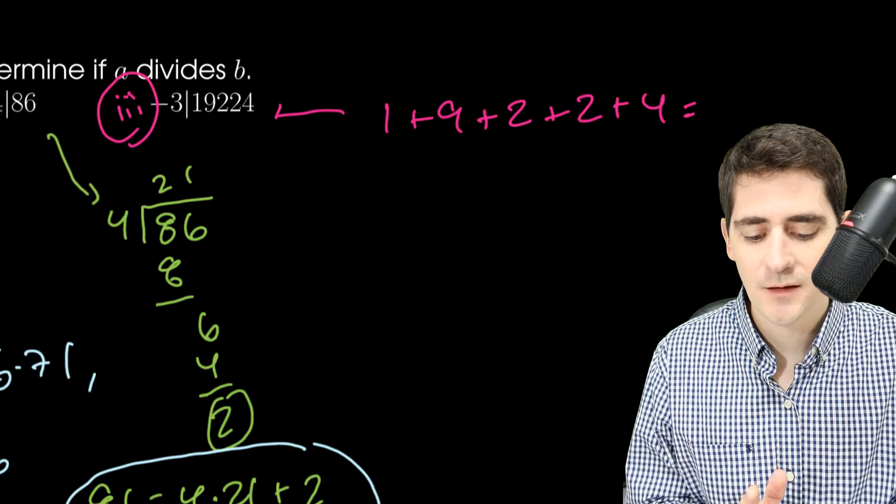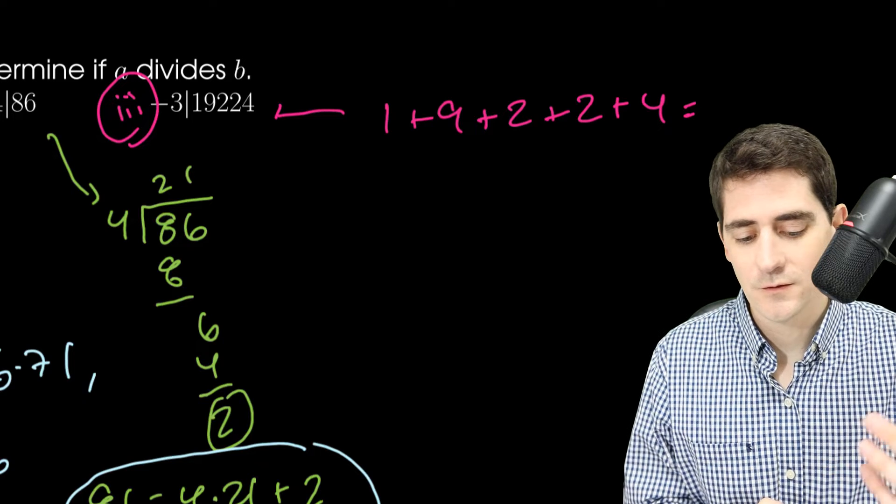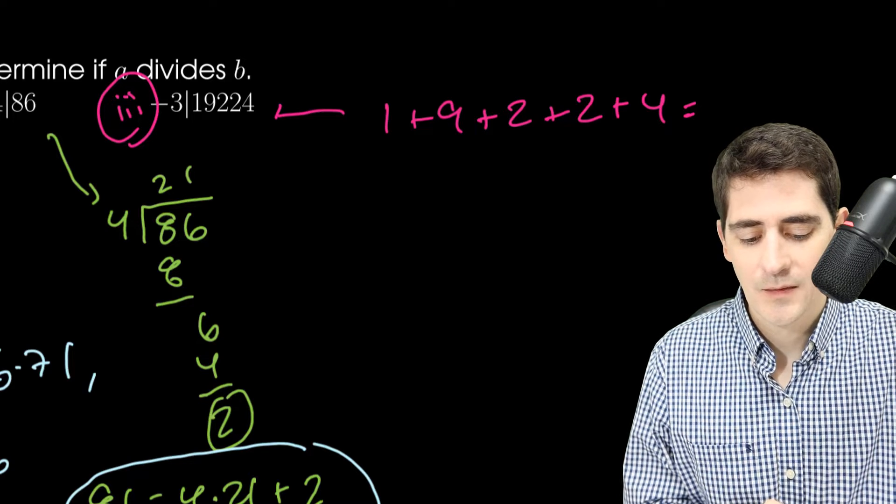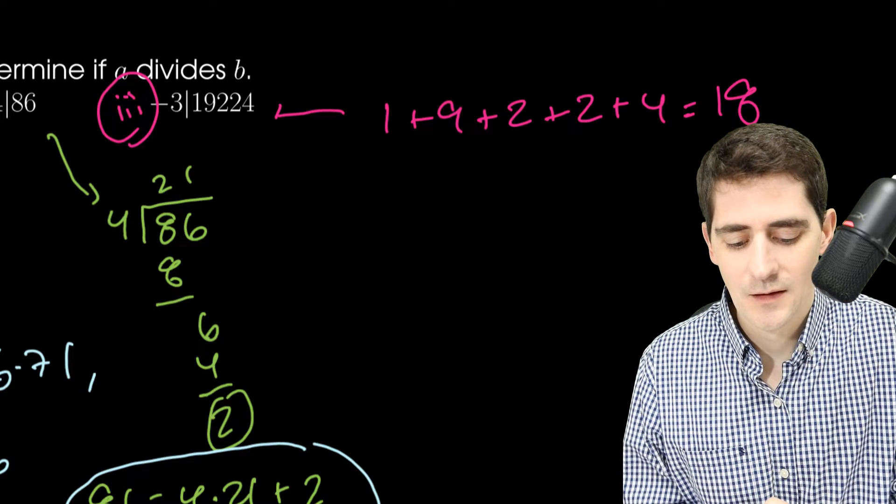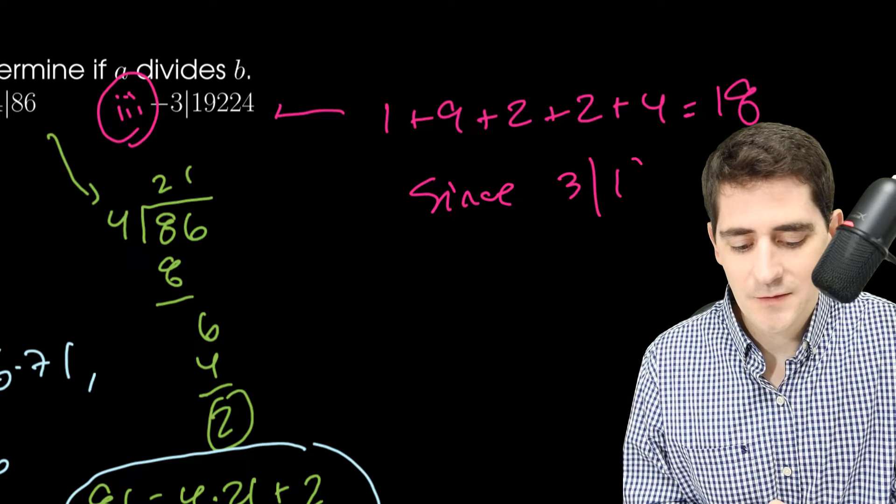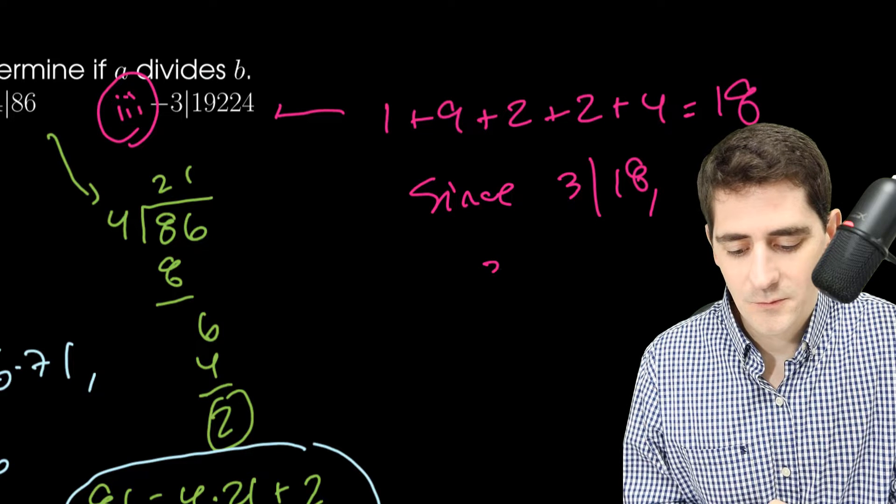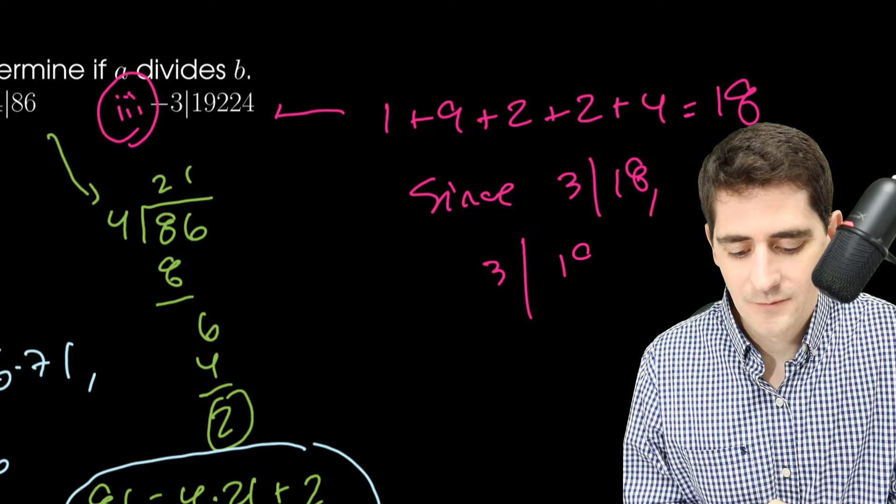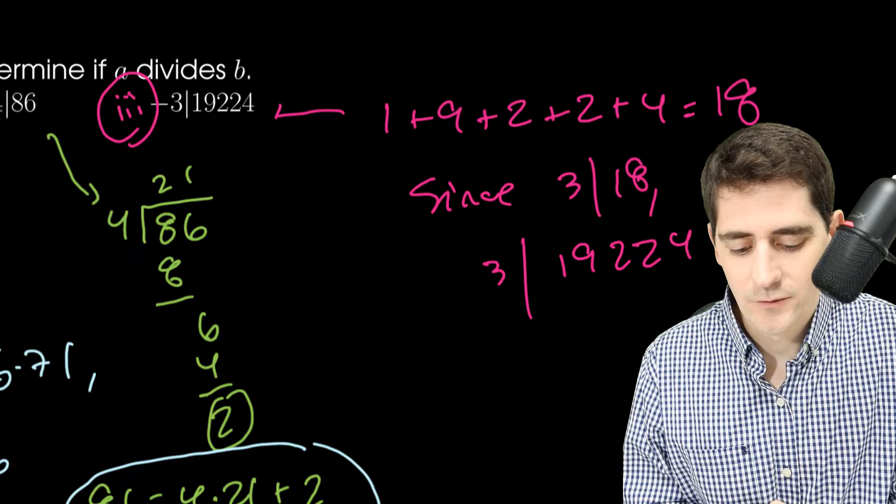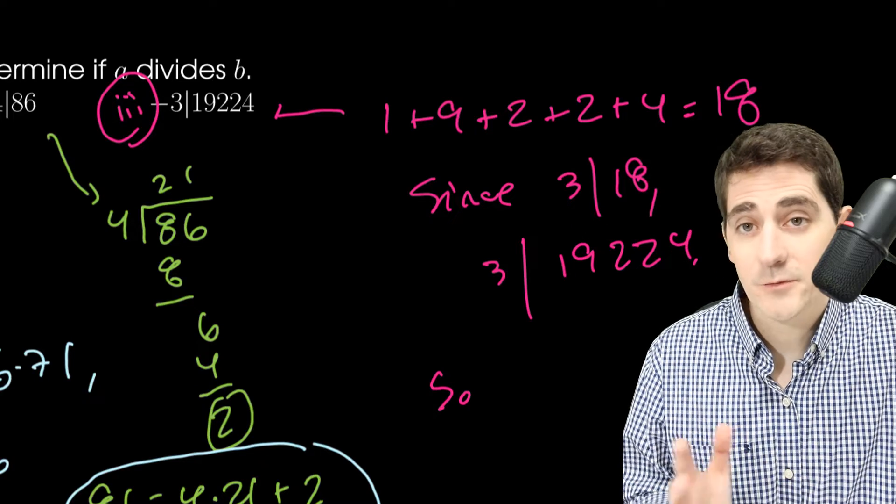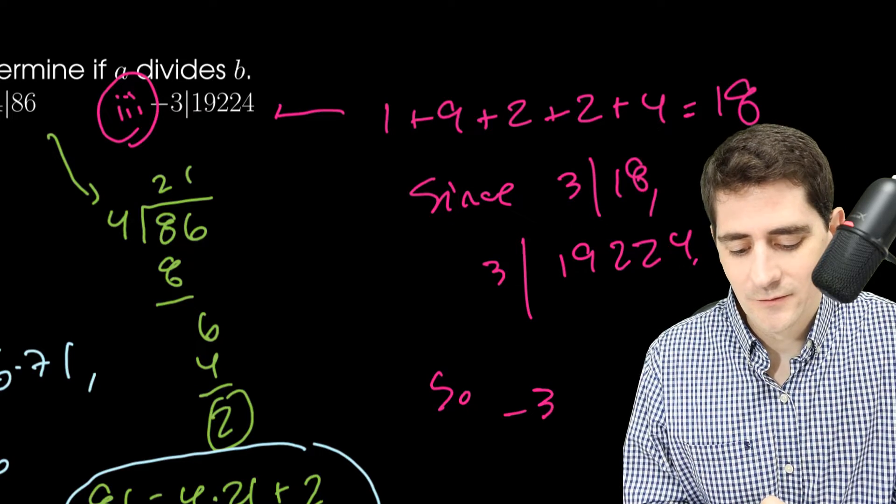So let's see, 1 plus 9 is 10, plus 2 is 12, 14. This adds up to 18. So since 3 divides 18, 3 will also divide 19,224. So if 3 divides it, negative 3 divides it as well.